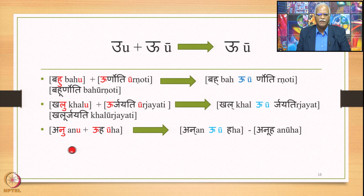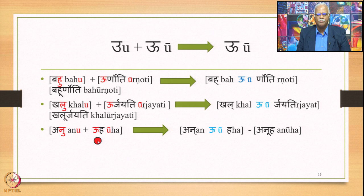Next we have a compound example: anu plus uha. The first word anu has short U at the end and the second word uha has long U at the beginning. Because this is a compound, Samhita is obligatory, and therefore 6.1.101 applies and generates the output an-u-ha.